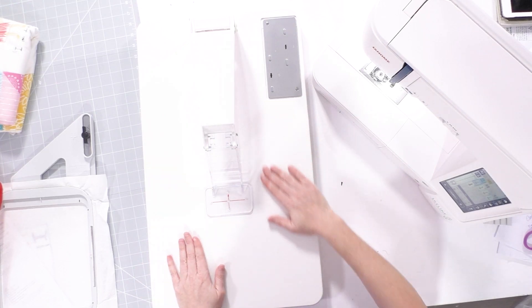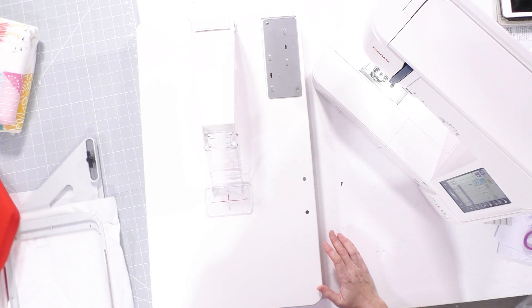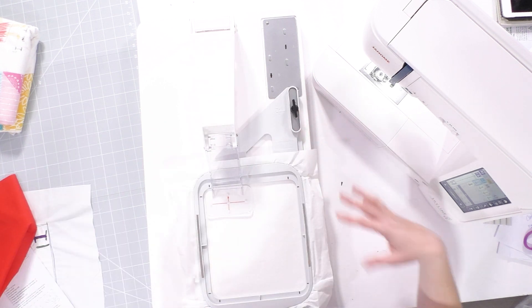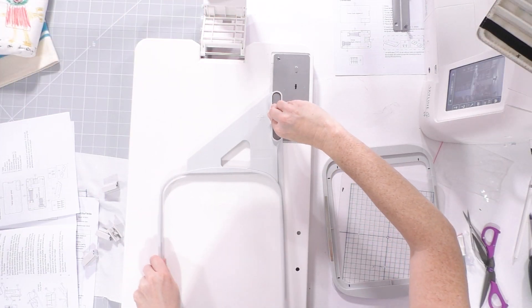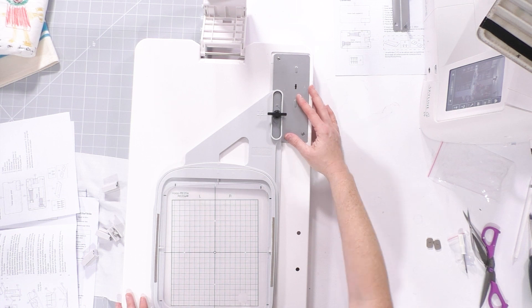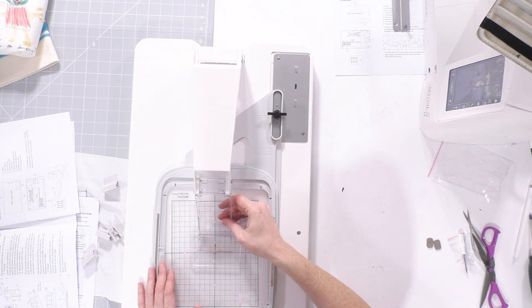Once you've got it all set up like I do here, you're ready to add your hoop. Just check the instructions because depending on which hoop you're using, you're going to attach it to either A or B. Make sure it's centered directly in the middle of your template.